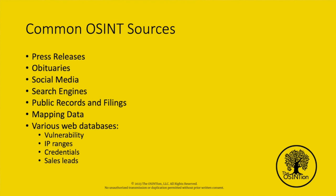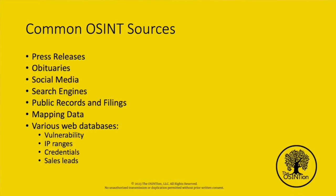Public records and filings — that's a treasure trove. Mapping data can be useful depending on what you're investigating. You have various web databases dealing with vulnerabilities — looking through CVEs and things like that, or looking at active vulnerability information from Shodan, or looking at Exploit-DB to help construct Google dorks to find particular vulnerabilities. You have things dealing with IP ranges like the WHOIS database and URL Scan. For credentials, de-hashed is my personal favorite; Intel X is another good one. Some are a little shadier than others, to be honest.